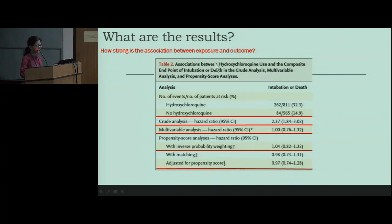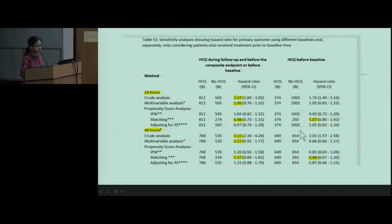What are the results? In crude analysis, the number of events — intubation or death — was 2.37 times more in the HCQ group, which may be a false outcome because there were sicker patients in the HCQ group and baseline characteristics were not well matched. However, on multivariable analysis and on propensity score matched analysis, there was no significant difference between the HCQ and no-HCQ groups, with a hazard ratio of 0.98 (95% CI: 0.73–1.31). When the baseline was changed from 24 hours to 48 hours to give more time for HCQ to act, there was still no difference — HCQ neither increased the probability of intubation nor was it a protective factor.